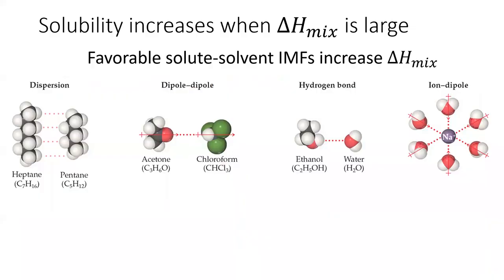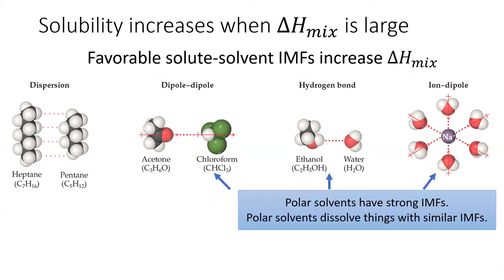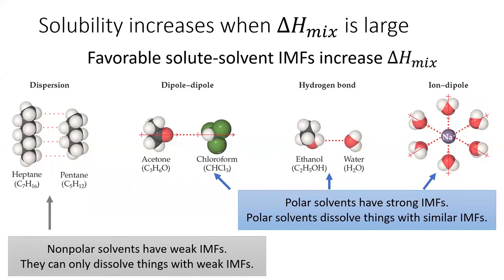The solution process is more energetically favorable if the enthalpy of mixing is large in magnitude. Having lots of strong IMFs between the solute and the solvent increases the size of the enthalpy of mixing. Polar solvents like water can engage in the strongest IMFs — dipole-dipole, hydrogen bonding, and ion-dipole forces — and are good at dissolving things which also exhibit these strong IMFs. Non-polar solvents like oils only exhibit the weakest IMF, dispersion forces, which are not strong enough to break apart the strong IMFs in a polar solute. Thus oils cannot dissolve polar molecules like sugar or ionic compounds like salt.